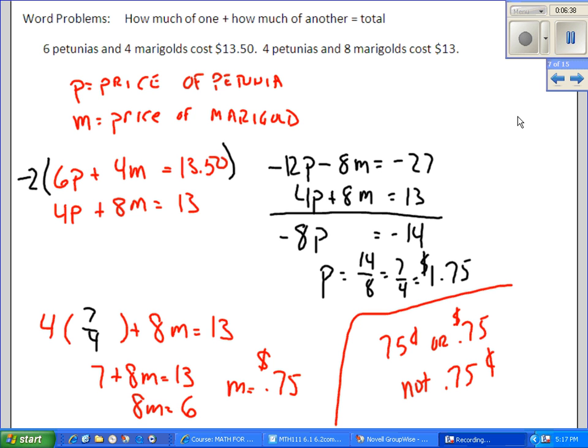So we're going to go shopping at our local nursery. I'm going to buy 6 petunias and 4 marigolds and I spent $13.50. My neighbor bought 4 petunias and 8 marigolds and spent $13.00. So as we're out there planning our flowers, we get to discussing the situation and wondering how much did the individual flowers cost.